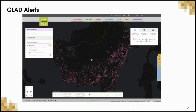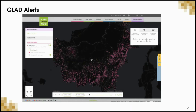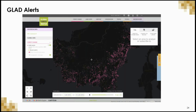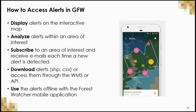This illustration highlights GLAD alerts for a region of Indonesia from January 1 through June 10, 2016. Through the Global Forest Watch platform, users can display GLAD alerts on the interactive map, analyze alerts for a specific area of interest, subscribe to receive email alerts when new alerts are detected, and download alerts as shapefiles, CSV files, or access them through WMS or API.